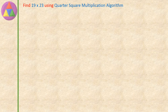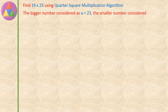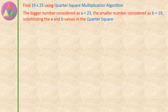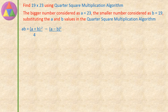Find 19 into 23 using the quarter square multiplication algorithm. The bigger number is considered as A equals 23, the smaller number as B equals 19. Substituting A and B values in the quarter square multiplication algorithm: AB equals A plus B whole square, divided by 4, minus A minus B whole square, divided by 4. This equals 23 plus 19 whole square, divided by 4, minus 23 minus 19 whole square, divided by 4.